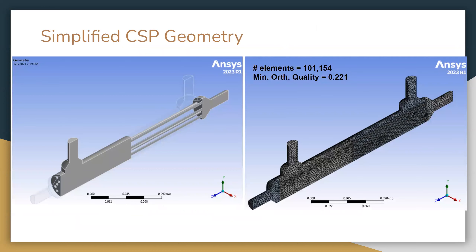Here you can see the simplified CSP geometry. We did not model the core because it required too many nodes and the computational time was too great. On the left there is just a transition between the shell and the tubes that is basically infinitely thin, because the paper states that the thinnest core is the best anyway.